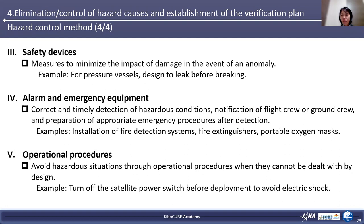The fourth hazard control method is installing alarm and emergency equipment. This involves detection of hazardous conditions, notification of flight crews or ground crew, and execution of appropriate emergency procedures after detection. For example, installation of fire detection systems, fire extinguishers, and portable oxygen masks. Since all crew members know the responses for these hazards, individual hazard responses are not prepared for all installed products — rather, established procedures are followed.